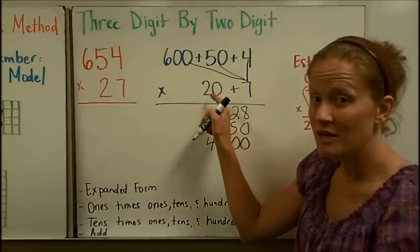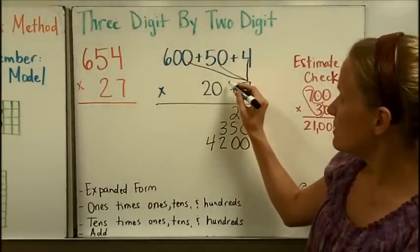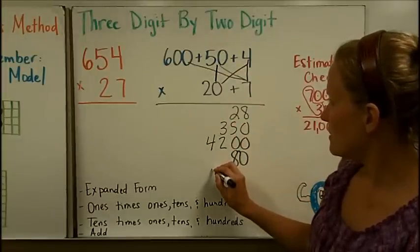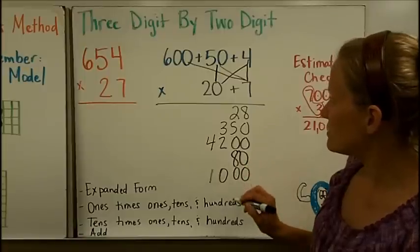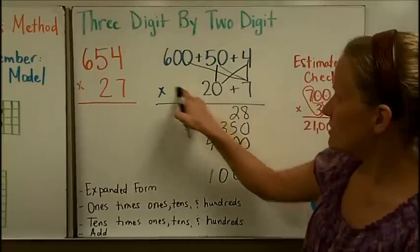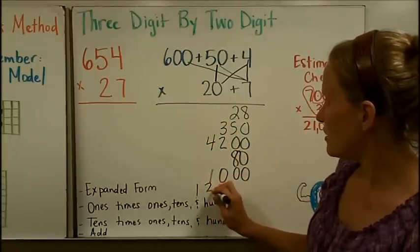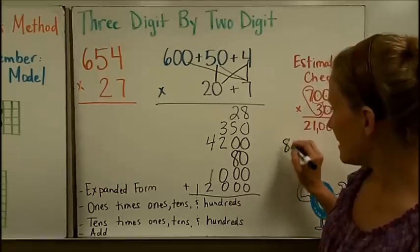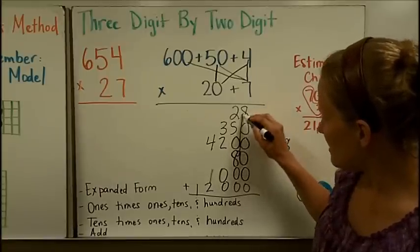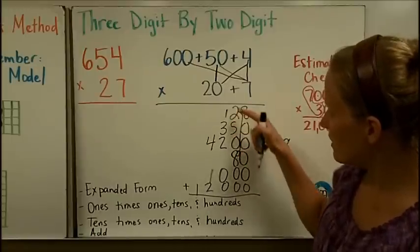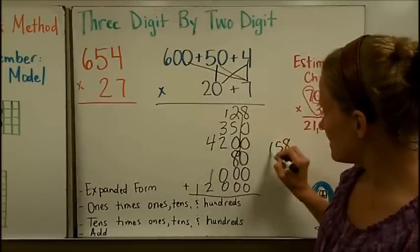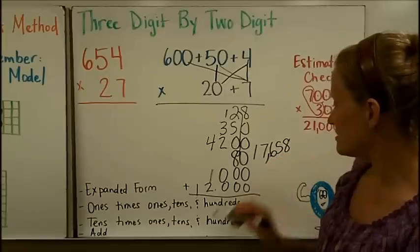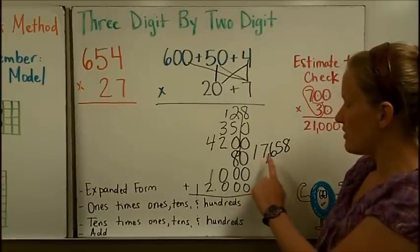Now I go back and do the tens digit times each place. Twenty times four is eighty. Twenty times fifty is one thousand — two times five is ten, add two zeros. Twenty times six hundred is twelve thousand — twelve and then three zeros. When I add them all up: ones column gives eight; tens column gives fifteen, carry the one; continuing through to get a final product of seventeen thousand six hundred fifty-eight.